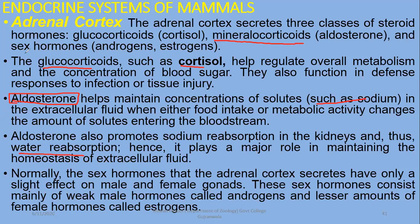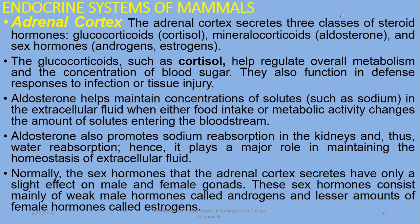Sex hormones are also produced by the adrenal cortex — androgens, testosterone, or estrogens. These steroid hormones are produced by the gonads as well as the adrenal cortex in small amounts. They consist mainly of weak male hormones called androgens and lesser amounts of female hormones called estrogens.